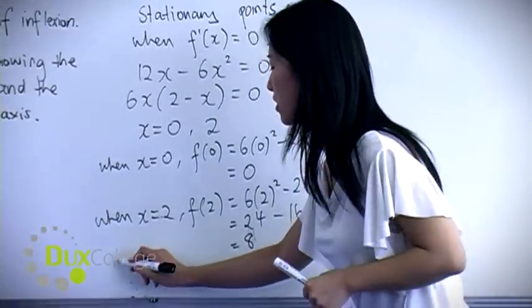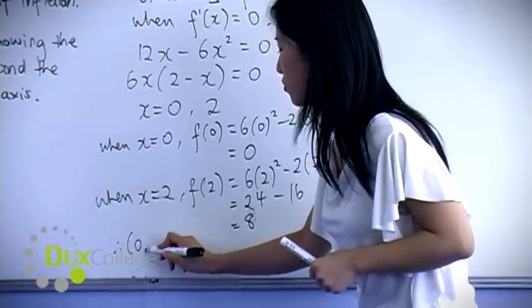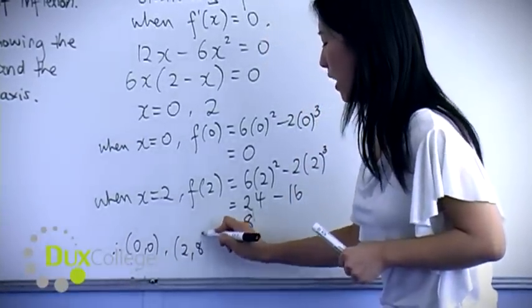So the two stationary points are (0,0) and (2,8).